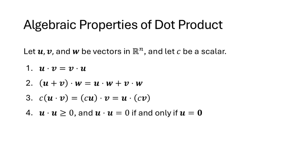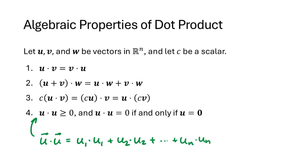Let's look at that last property more closely. U dot u is multiplying the entries of u by the corresponding entries of u — squaring the entries and adding up the results. Because these entries are real numbers, those squares will always be greater than or equal to zero, so their sum is greater than or equal to zero, and only equals zero if all of those entries are zero. That gives us property 4.